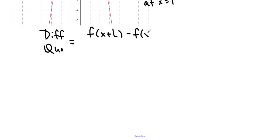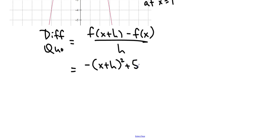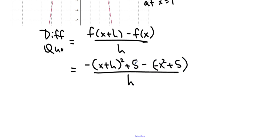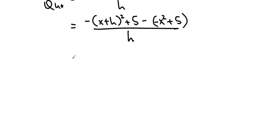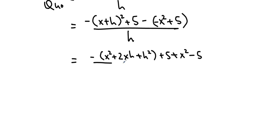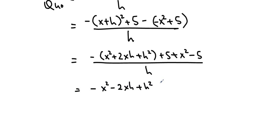We know the difference quotient is f of x plus h minus f of x, over h. We know f of x equals negative x squared plus 5, so this becomes negative x plus h, all squared, plus 5, minus negative x squared plus 5, over h. Since h is not 0, we're allowed to divide by it. Expanding: negative x squared plus 2xh plus h squared plus 5, then plus x squared minus 5, over h.